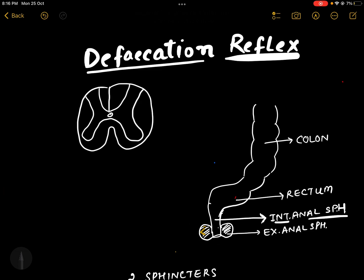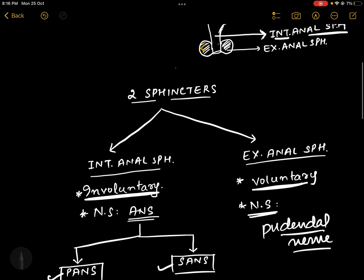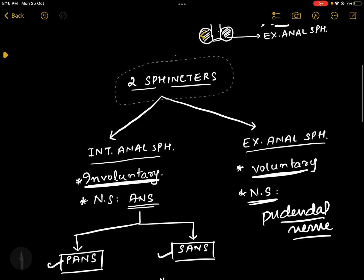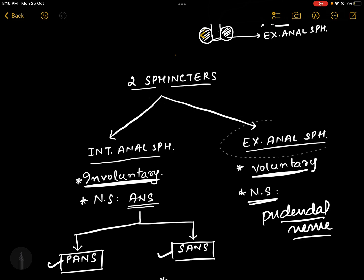The main parts that take part in the defecation reflex are the two sphincters of the anus — the internal and external anal sphincters. There are two sphincters: the internal anal sphincter and the external anal sphincter.